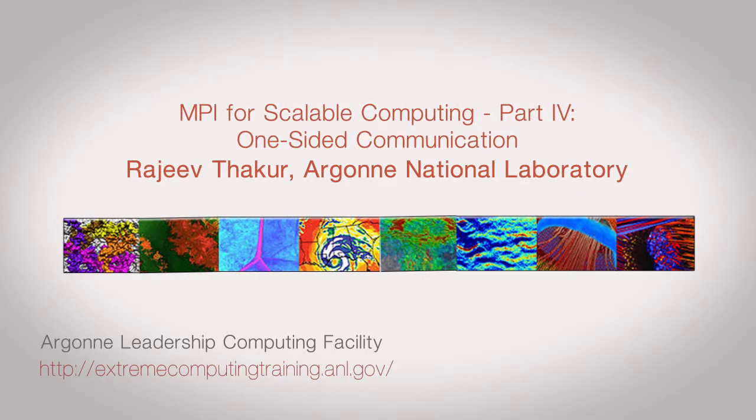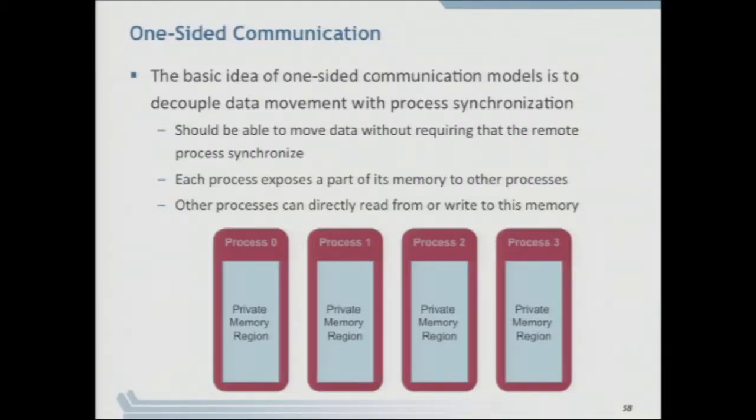In the afternoon, we're going to cover some new material — some more advanced material — starting with one-sided communication. We'll also look at process topologies, topology mapping, and neighborhood collectives. Some of these things are new in MPI 3: some of the one-sided is new, the neighborhood collectives are new, and some of the topology mapping stuff is also new from MPI 2.2. We'll have some hands-on with respect to that, and Bill will also go through the code in a little more detail, since some of you didn't quite understand what is where in the code because we just gave you the source file.